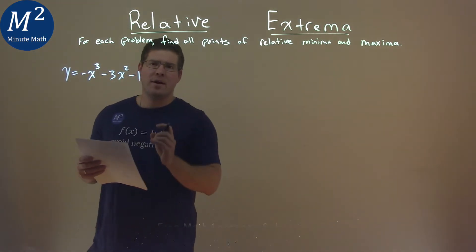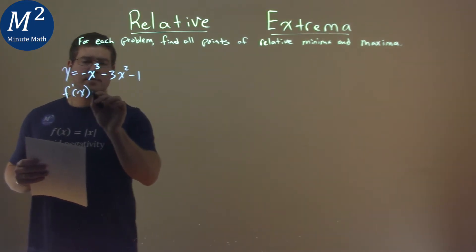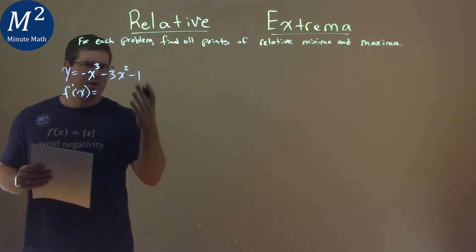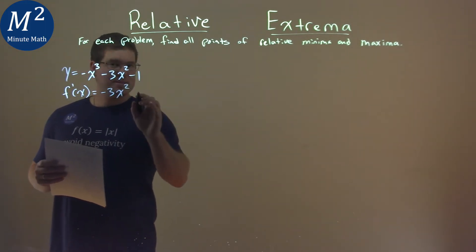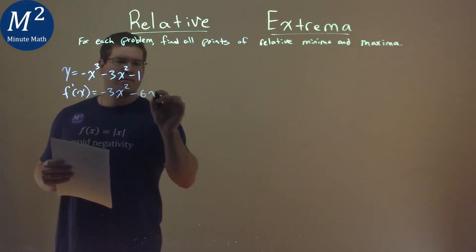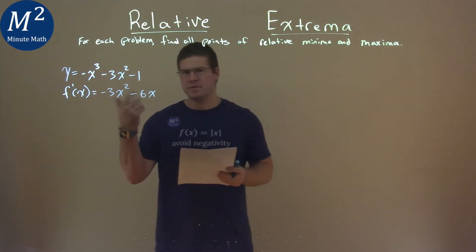Right here I want to find the first derivative, f prime of x. To do that, we use our power rule. 3 comes down, negative 3x squared here, and 2 times 3 is 6, so we have negative 6 here, x to the first power. The derivative of negative 1 is 0, don't need that.